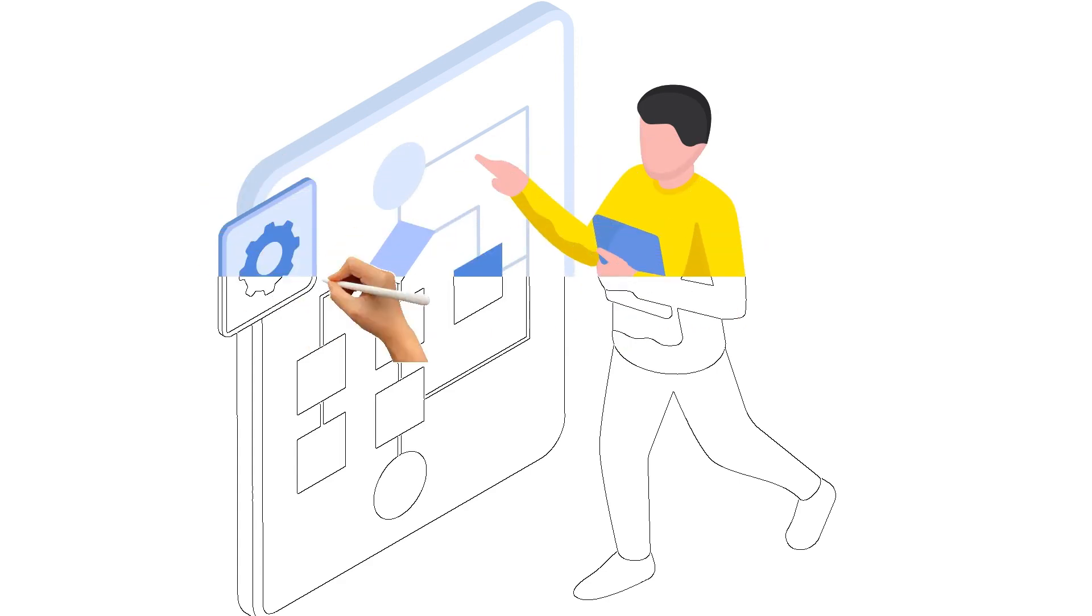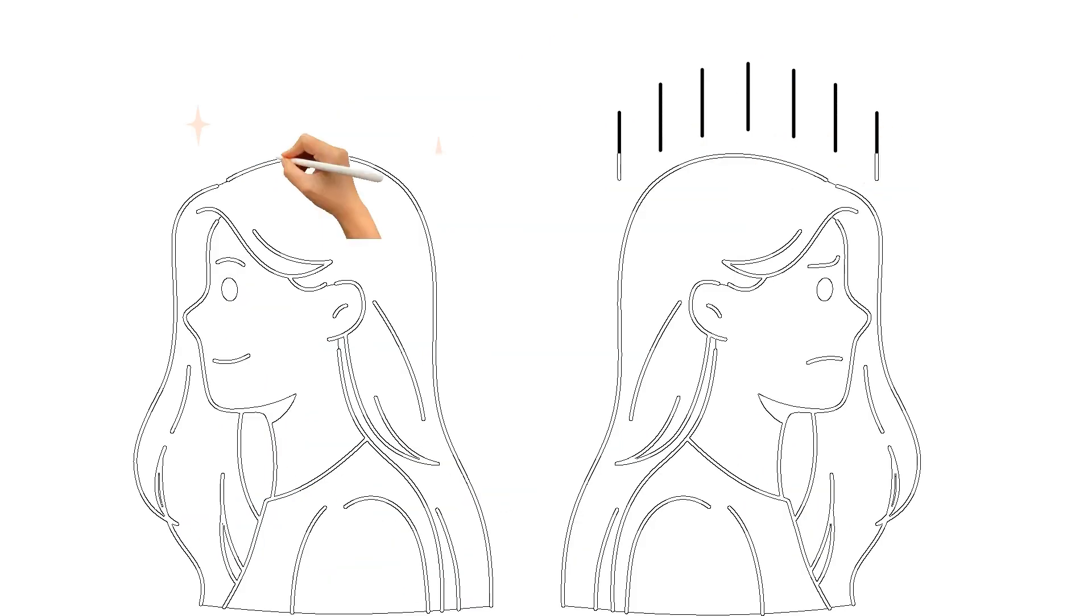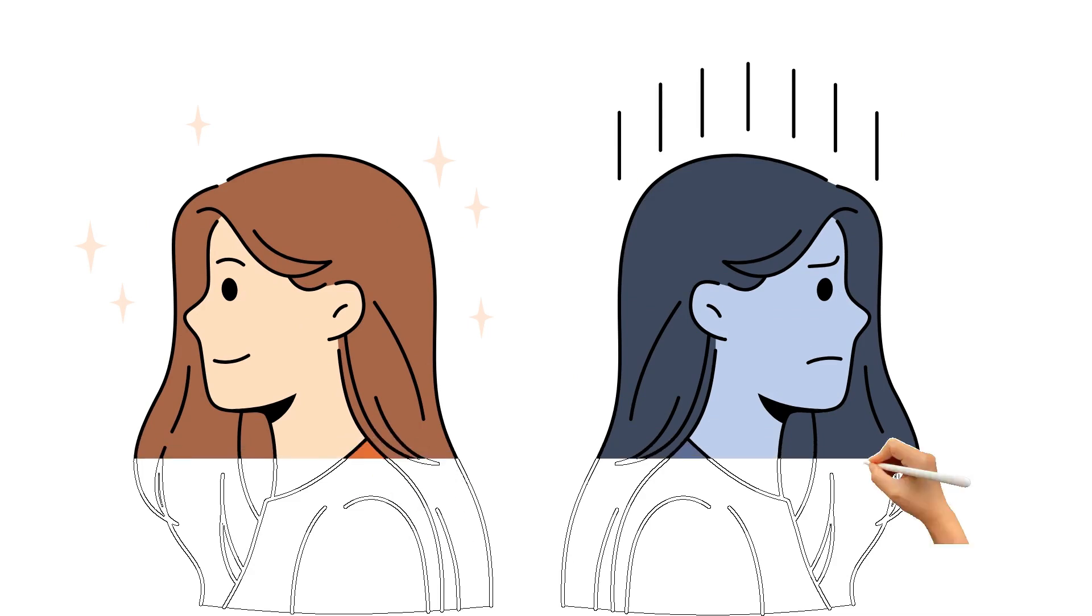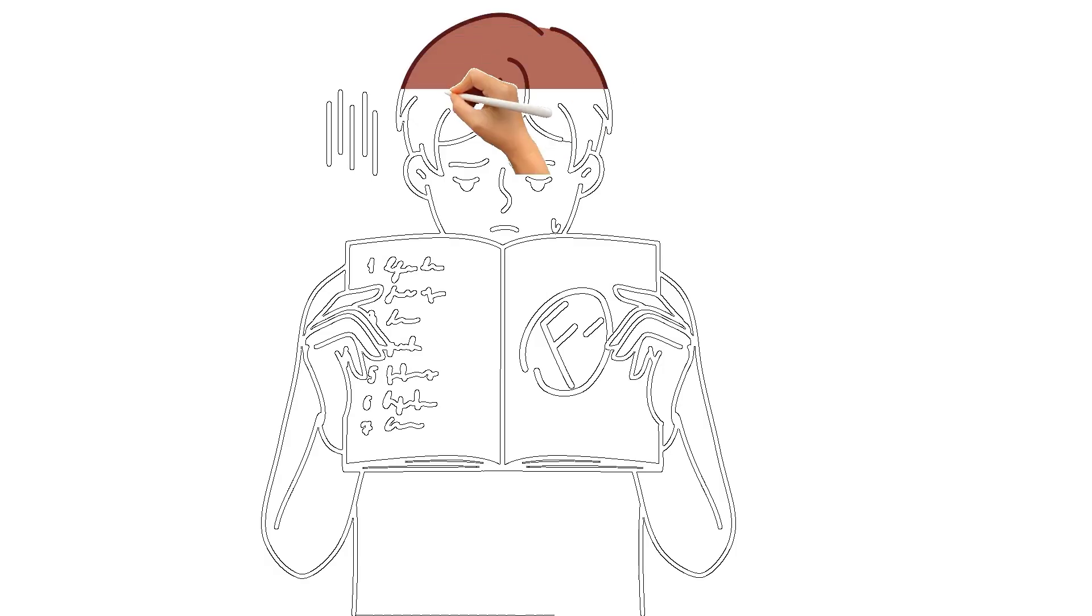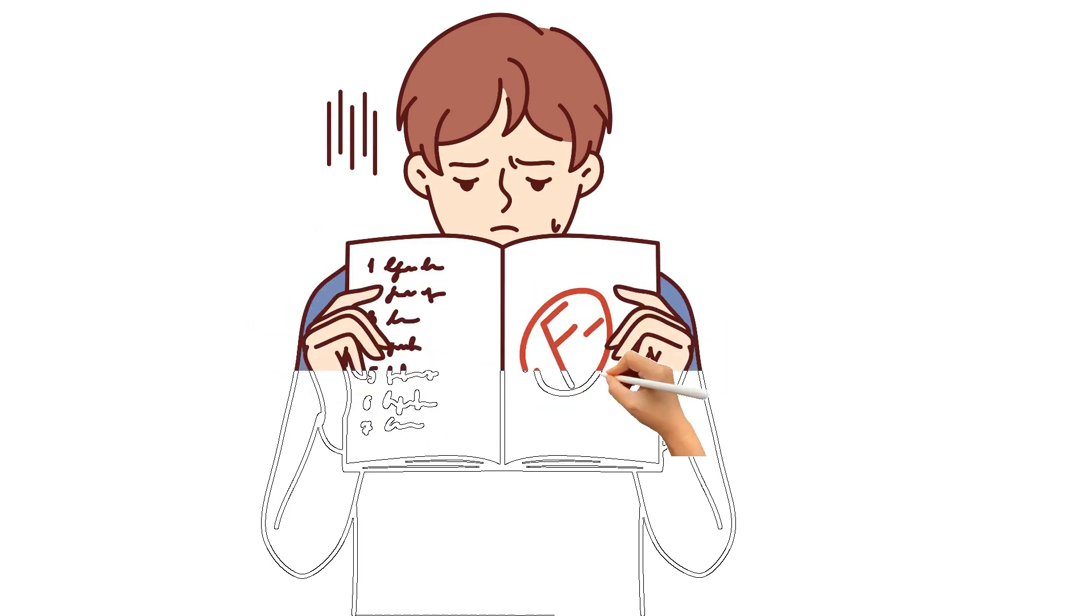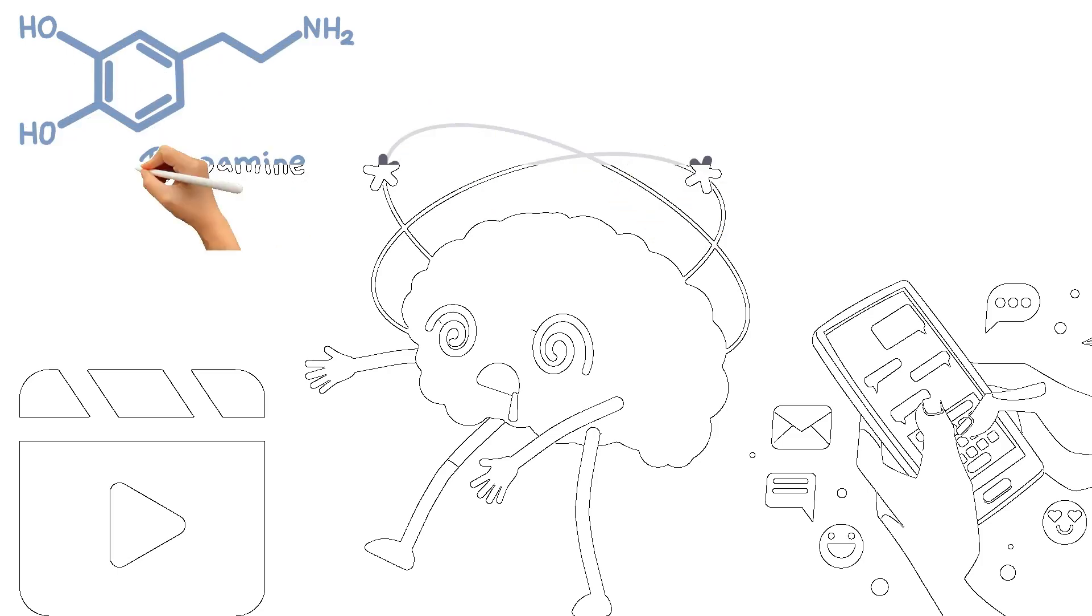But hey, at least we're informed, right? Wrong. We're drowning in a sea of information, but most of it is about as nutritious for our brains as a diet of pure sugar is for our bodies. We know more about celebrity breakups than we do about world events. We can name every TikTok dance trend but can't locate countries on a map. It's like we're filling our brains with mental junk food and wondering why we can't think straight.